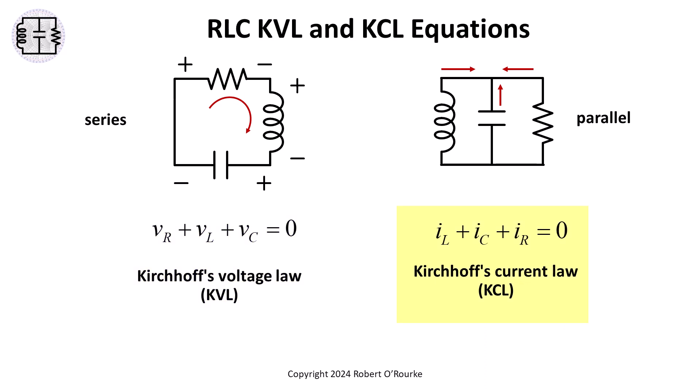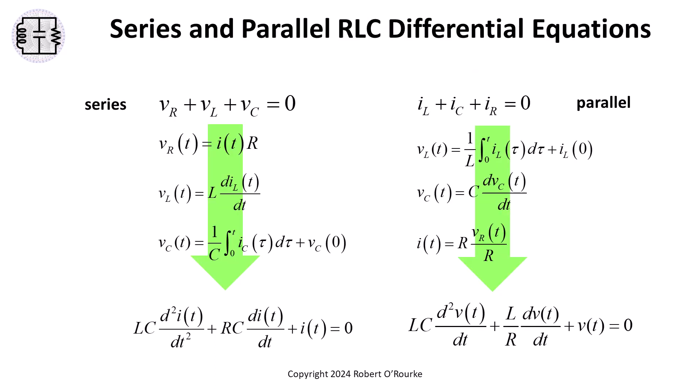For the parallel RLC circuit, Kirchhoff's current law, KCL, sums the currents entering or leaving a node. This sum models the parallel connection of the three components R, L, and C.